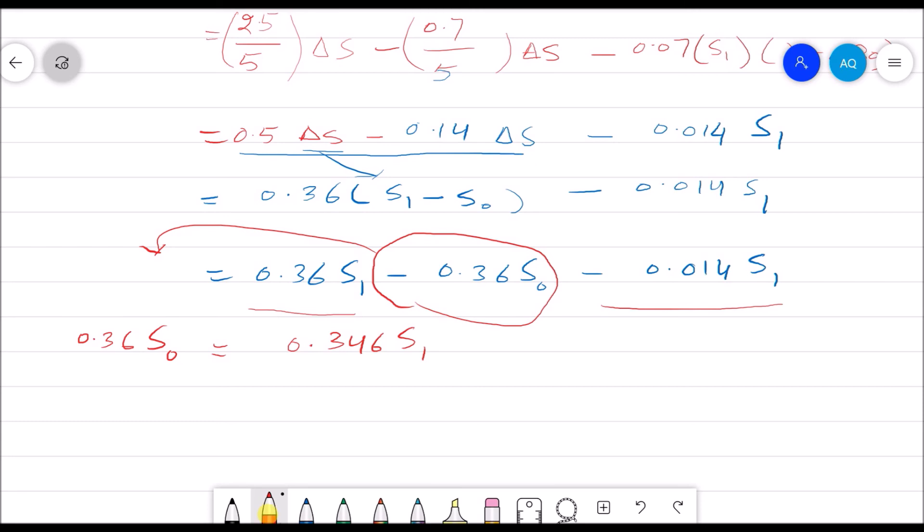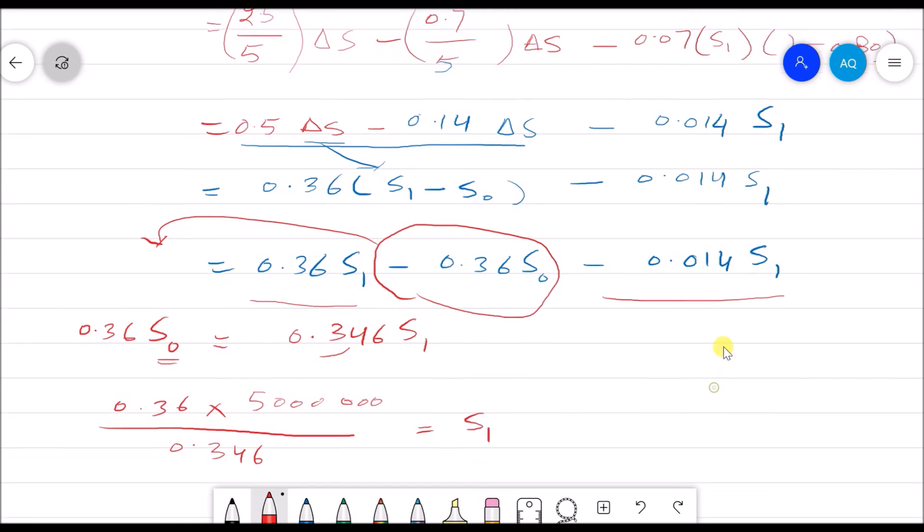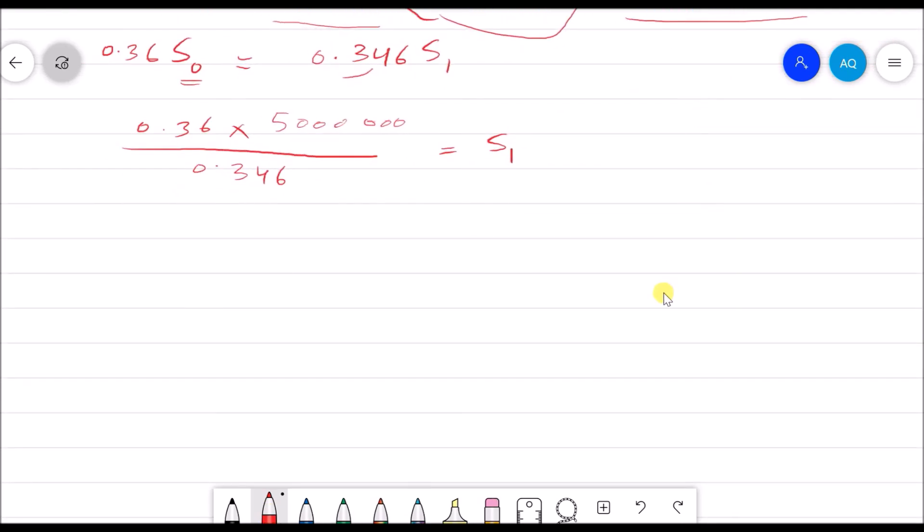Now we can solve this equation. 0.36S₀ is $5,000,000. Bring it to the other side: 0.346, and S₁. So by solving this equation, we will get S₁ = $5,202,312.